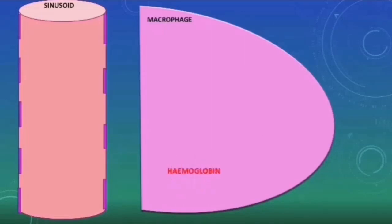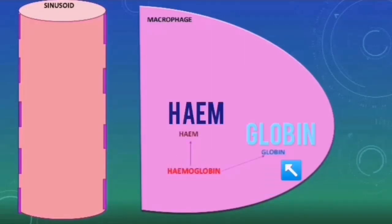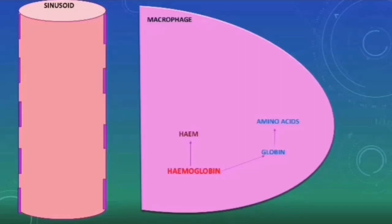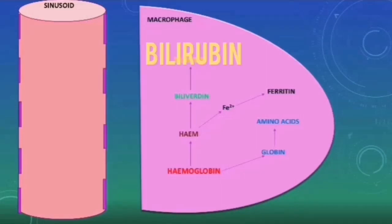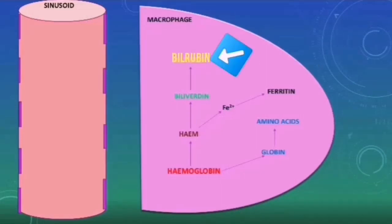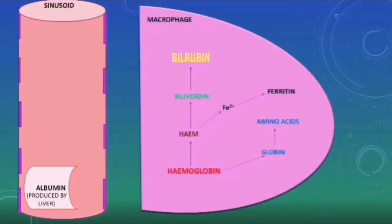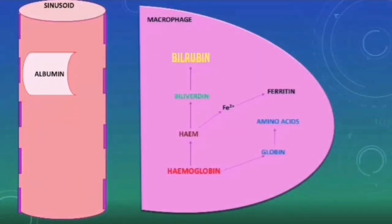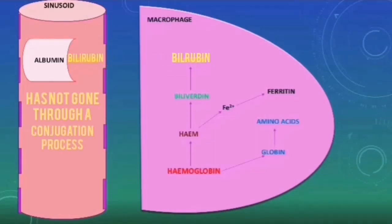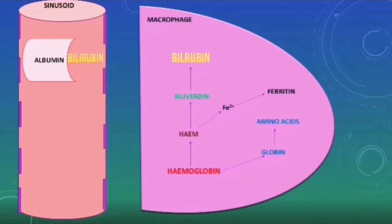The hemoglobin in the red blood cells will be broken down into heme and globin. The globin will be used to make amino acids. The heme will be further broken down into iron, which will be stored as ferritin, and biliverdin. The biliverdin will be further metabolized into bilirubin. This bilirubin is not water-soluble, so it cannot freely dissolve in the plasma and needs a transporter — albumin, which is made by the liver. The albumin will bind this bilirubin. As it has not gone through conjugation, it is called unconjugated bilirubin, and it will now move towards the liver.